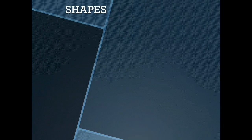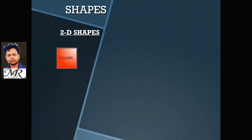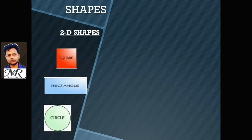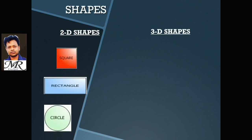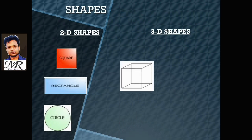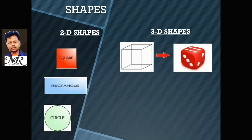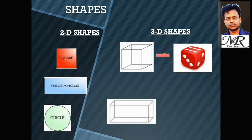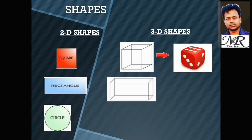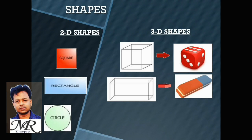2D Shapes: Square, Rectangle, Circle. 3D Shapes: Cube, Cuboid, Sphere.